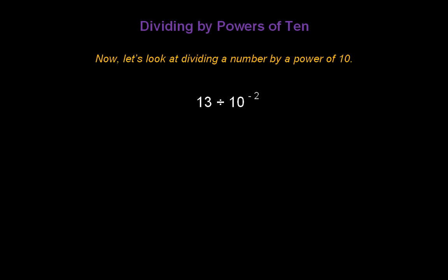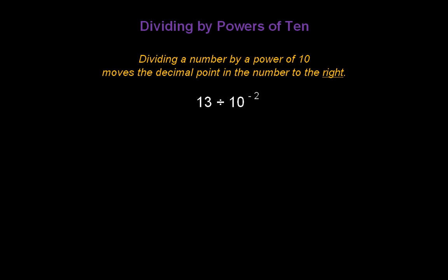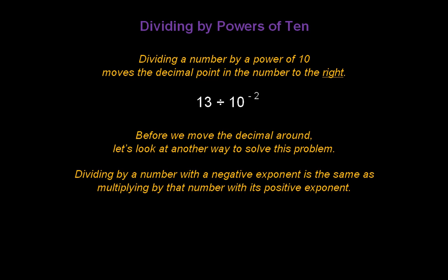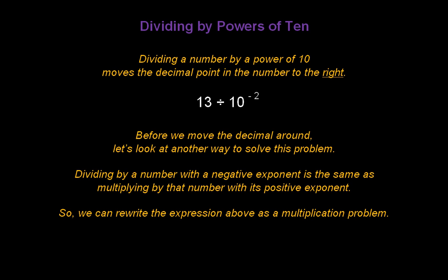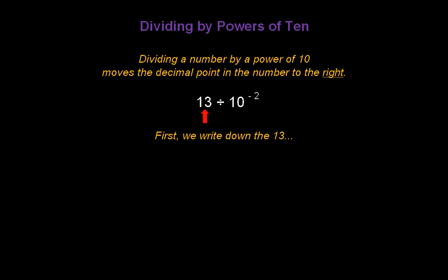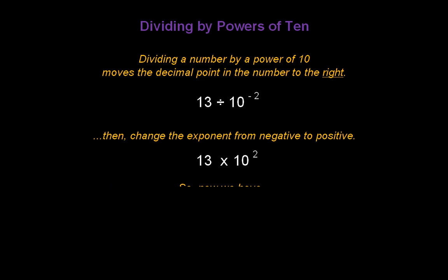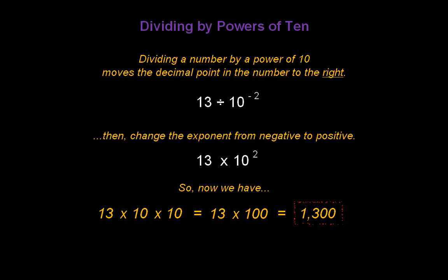Now let's look at dividing a number by a power of 10. Take this example: 13 divided by 10 to the negative second. Dividing a number by a power of 10 with a negative exponent moves the decimal point in the number to the right. Dividing a number with a negative exponent is the same as multiplying that number by its positive exponent. So we rewrite 13 divided by 10 to the negative 2 as 13 times 10 to the positive 2. That gives us 13 times 10 times 10, which simplifies to 13 times 100, or 1,300.